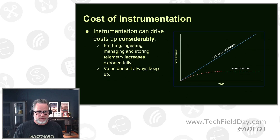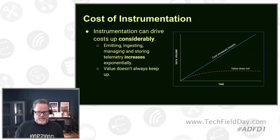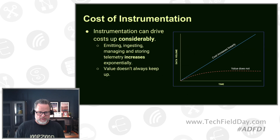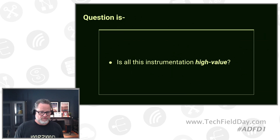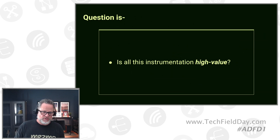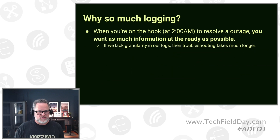All of this instrumentation comes at a cost — it's the curve Tucker showed earlier, where we're producing larger volumes of data. The cost is going up incrementally, but the value is not keeping pace. All of this information that we're exporting, maybe we'll use it; maybe a lot of it will just get retained and never looked at. There are probably better ways to keep the information we need when we need it, but discard it the rest of the time. We have to ask: is all this instrumentation high value?